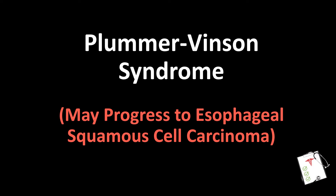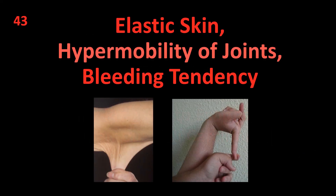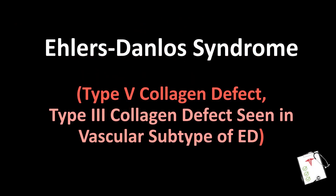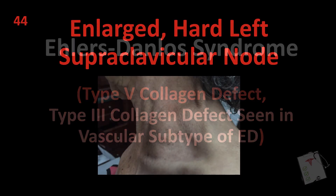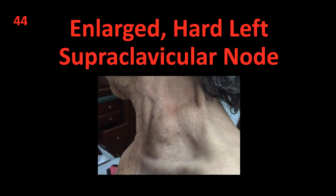Number 43: Elastic skin, hypermobility of joints, bleeding tendency. Answer: Ehlers-Danlos syndrome — type 5 collagen defect; type 3 collagen defect seen in vascular subtype. Number 44: Enlarged, hard left supraclavicular node. Answer: Virchow's node (diagnosis not explicitly stated in transcript).